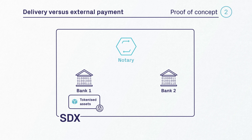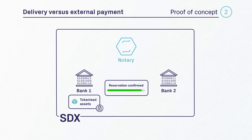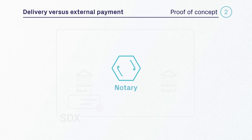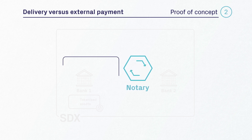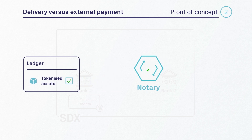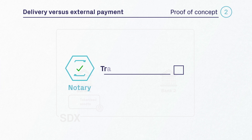Upon the successful blocking of tokenized assets with Bank 1, the reservation is confirmed by the system. Throughout the whole transaction, the notary node checks whether state changes to the ledger concern an old state. In particular, it checks whether the tokenized assets involved in the transaction have not already been spent. If successful, the notary node signs the transaction.